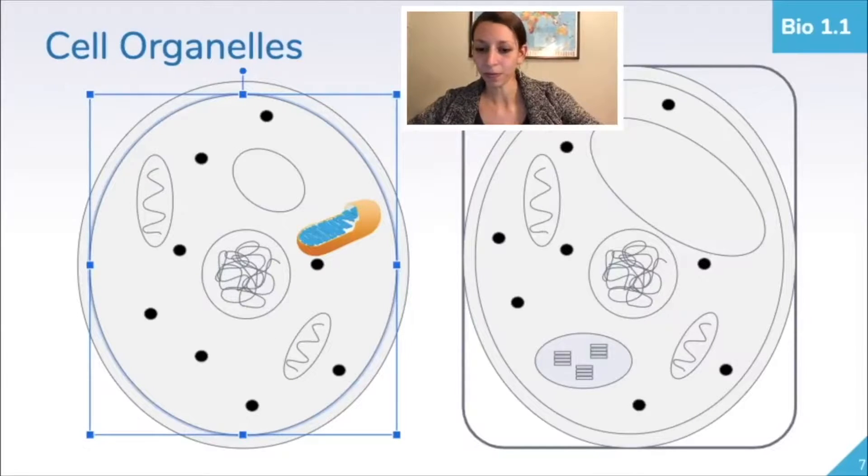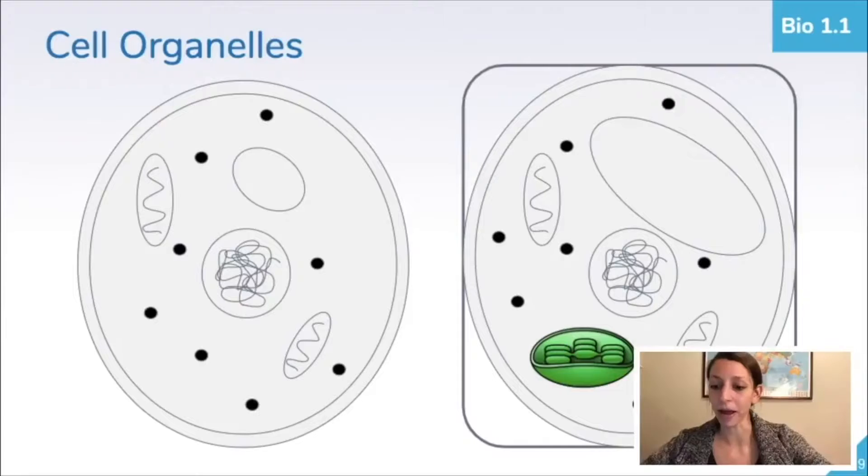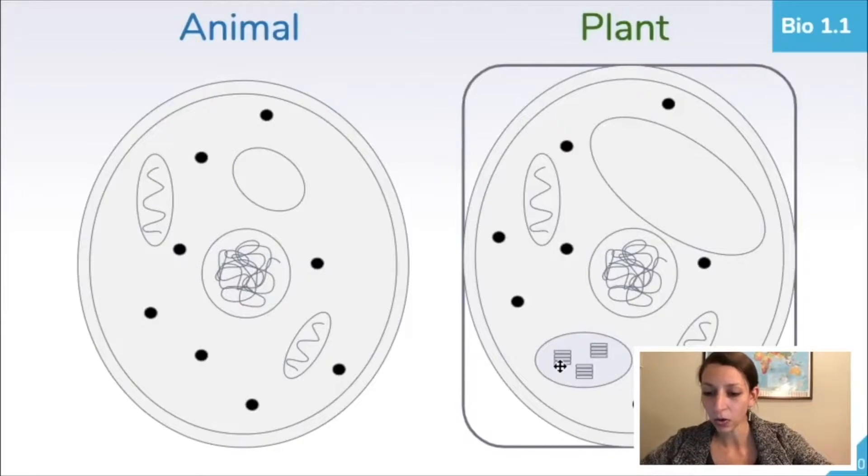Our vacuoles here and here, chloroplasts again only in plant cells, and ribosomes represented frequently by little dots. You'll also potentially see a chloroplast drawn more like this with stacks of thylakoids, which are an important part of the chloroplast. You don't really need to focus on that for the biology EOC, just be able to recognize chloroplast as an important organelle with these kind of stack-like structures within a plant cell only.